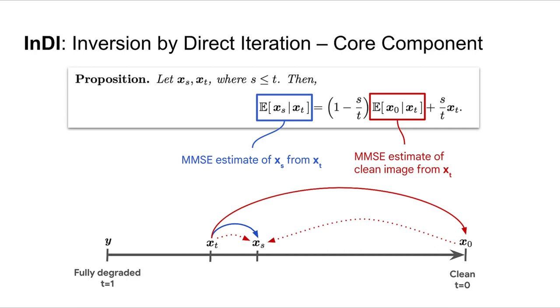Specifically, the proposition says that if we want to estimate the image x with intermediate degradation at time s, given that we know x_t, we can actually get it by estimating the clean image x_0, and then by doing a convex combination with the current degraded image x_t.